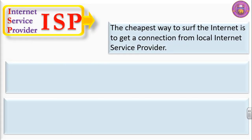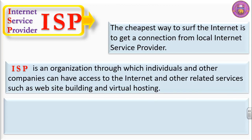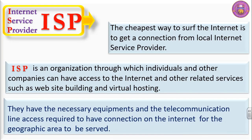The cheapest way to surf the internet is to get a connection from local internet service provider. ISP is an organization through which individuals and other companies can have access to the internet and other related services such as website building and virtual hosting. They have the necessary equipment and the telecommunication line access required to have connection on the internet for the geographical area to be served.